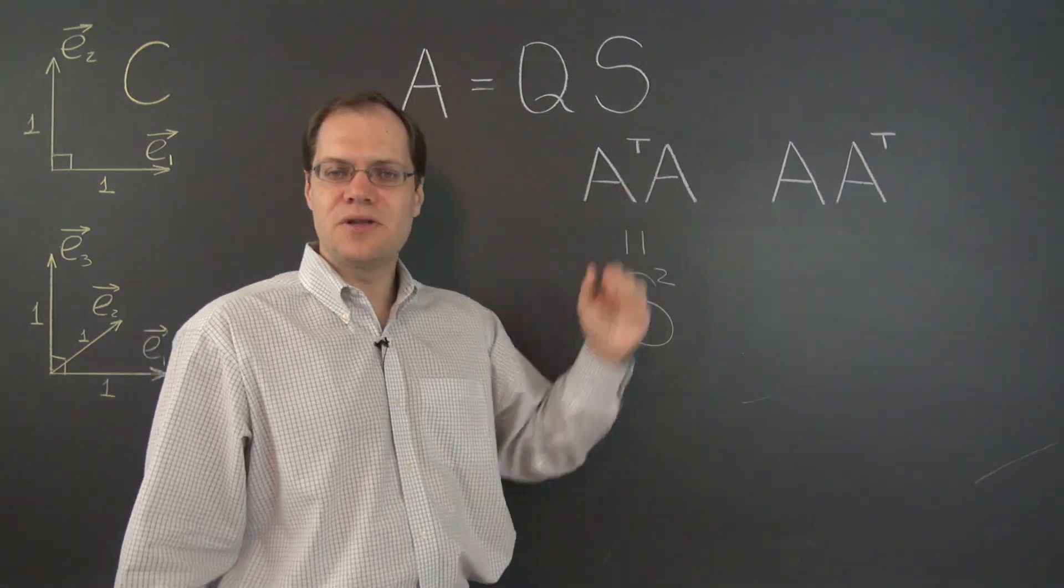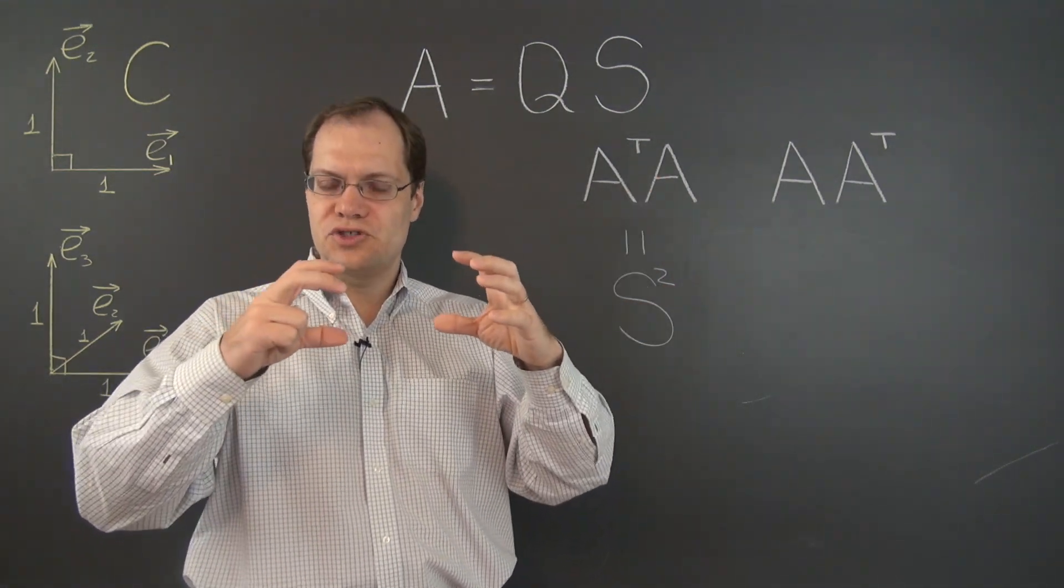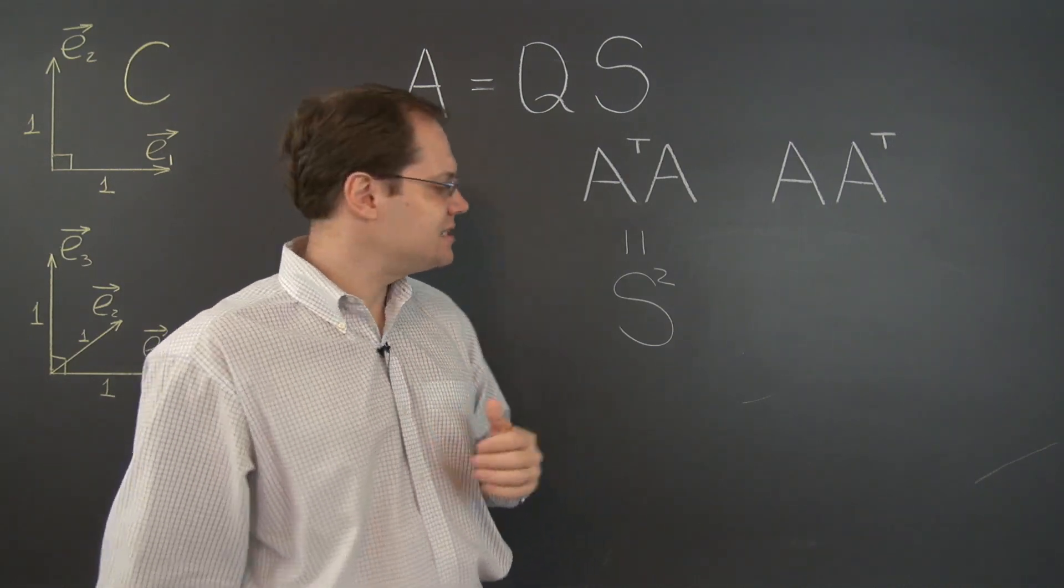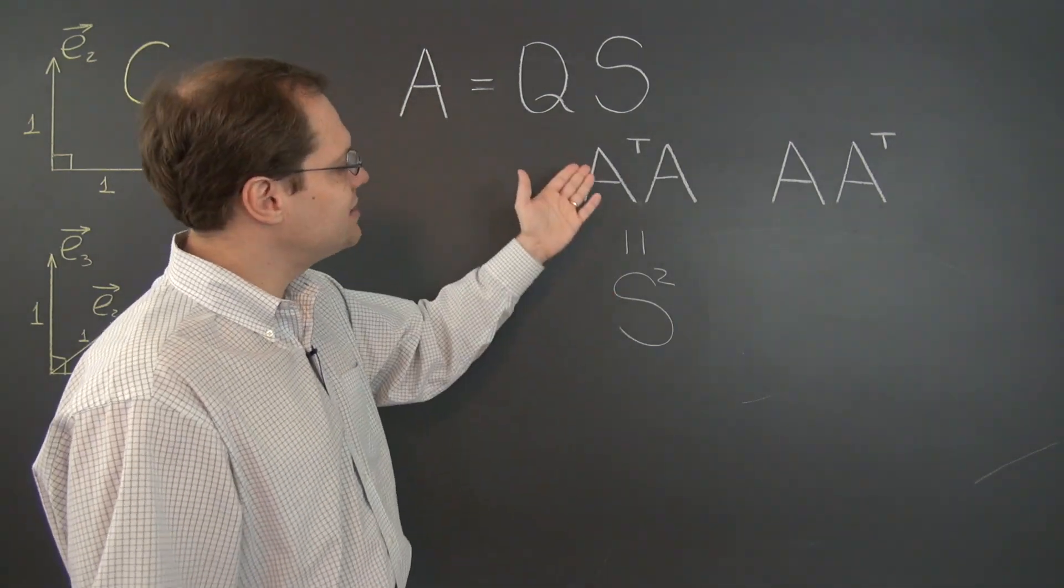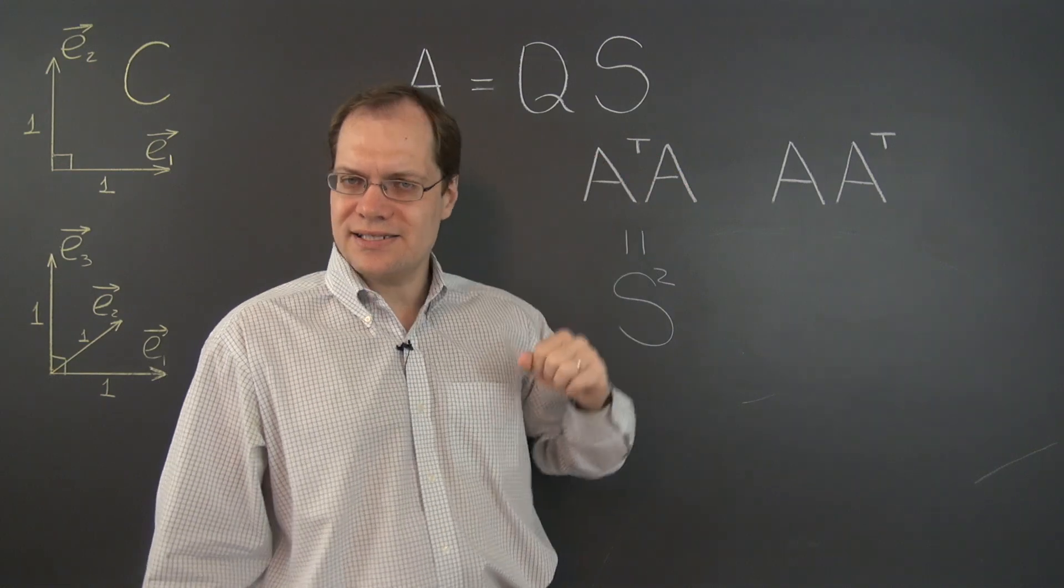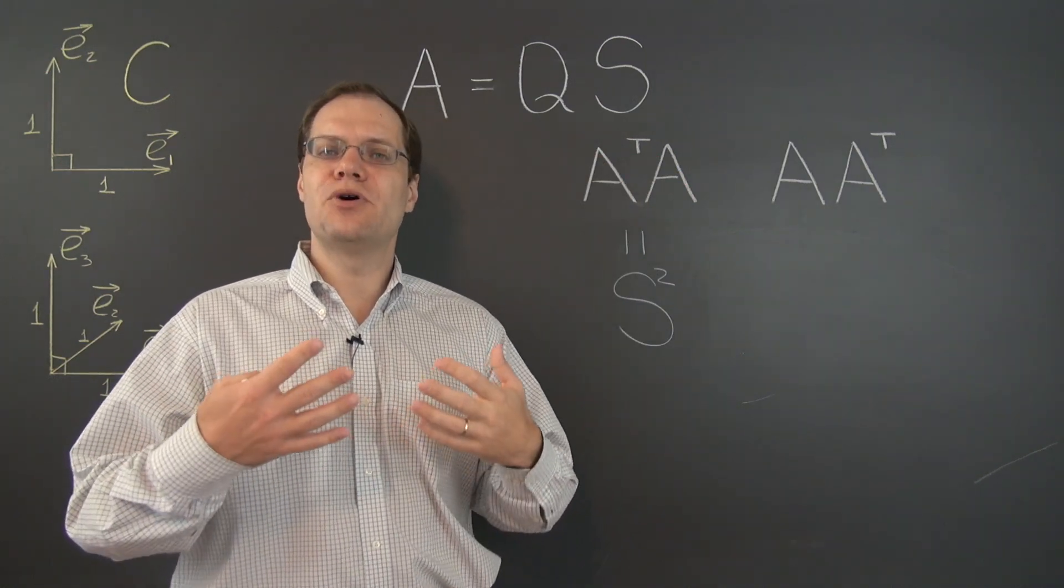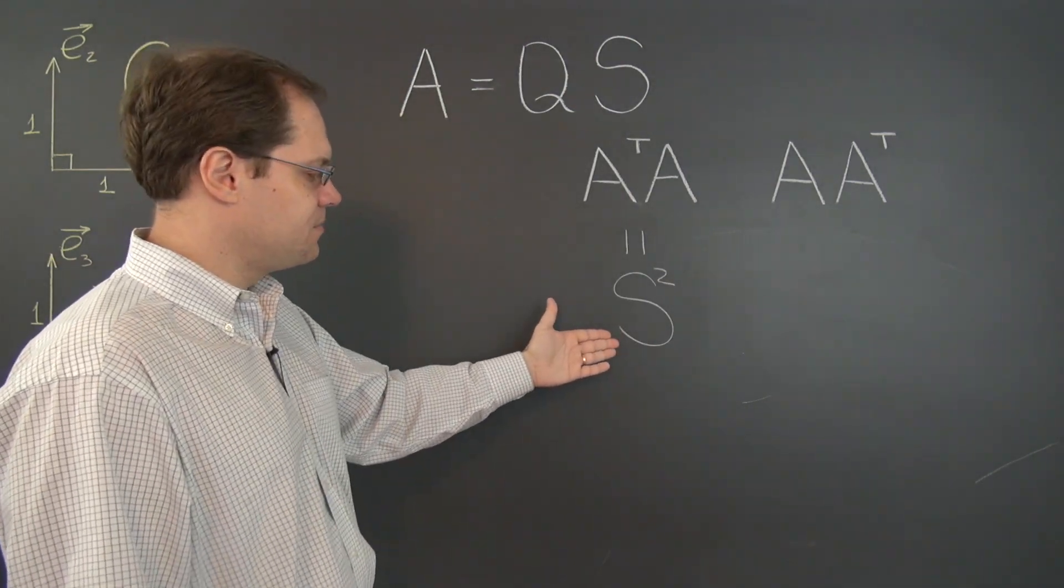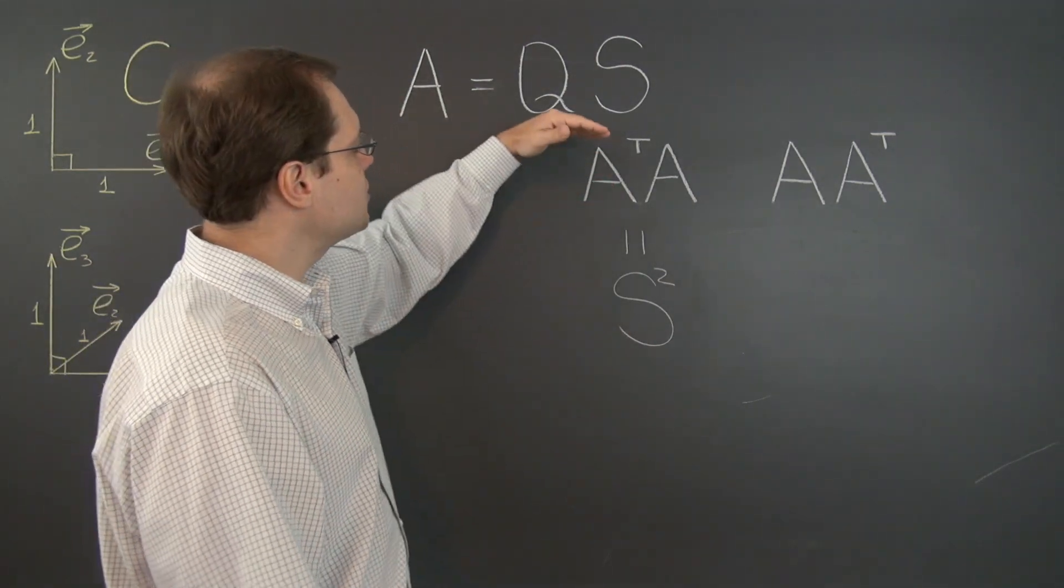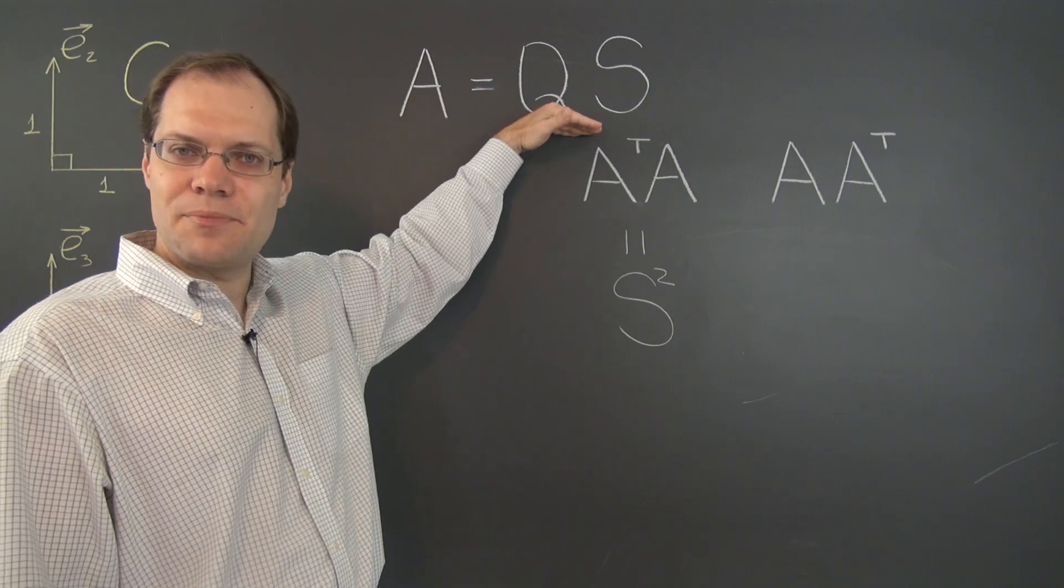That's because this combination brings Q and Q transpose together. That equals identity and we're left with essentially S transpose S and because S is a symmetric matrix, its transpose equals itself and we're left with S squared. That was just a review of what we already saw when discussing this decomposition.